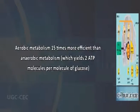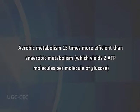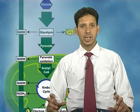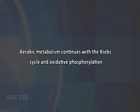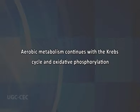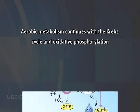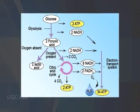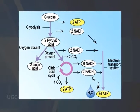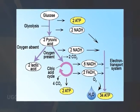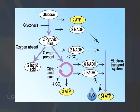Aerobic metabolism is up to 15 times more efficient than anaerobic metabolism, which yields two ATP per molecule of glucose. This shares the initial pathway of glycolysis, but aerobic metabolism continues with the Krebs cycle and oxidative phosphorylation. The post-glycolytic reactions take place in the mitochondria in eukaryotic cells and in the cytoplasm in prokaryotic cells.